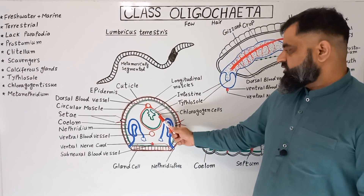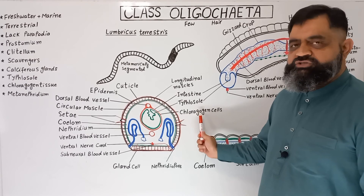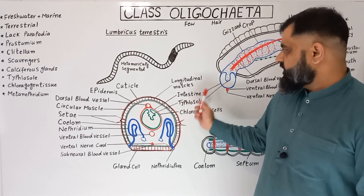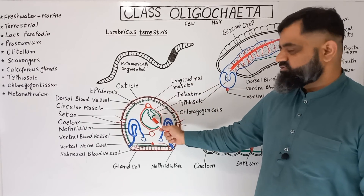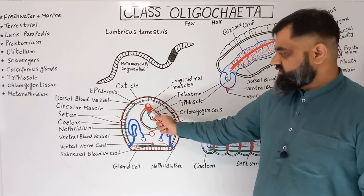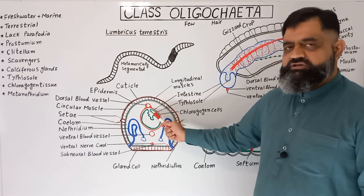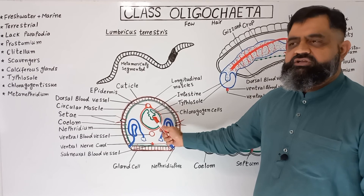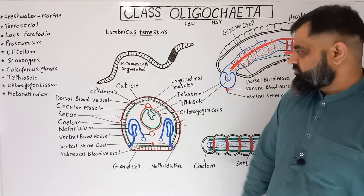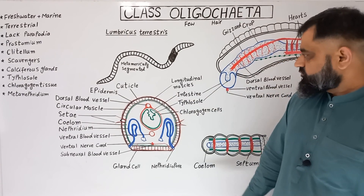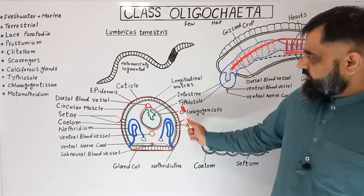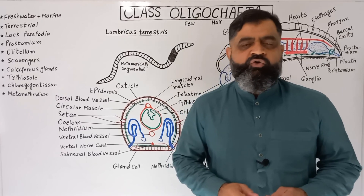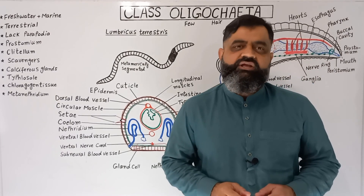On the dorsal surface of the gut there is chloragogen tissue, which acts like a liver and helps remove nitrogenous waste. The typhlosole, as already mentioned, is an invagination of the intestine — the green-colored structure running along the whole length of the body — and this invagination increases the surface area for digestion and absorption. And that's all for today. I hope it makes sense, and I'll see you in the next lecture.